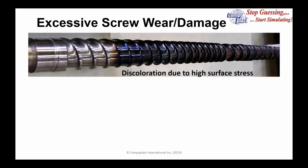Let's begin with excessive screw wear or damage. This photograph shows an extrusion screw that's been pulled out after being used and cleaned off. You notice the discoloration that occurs — this is the original color when the screw was first put in the extruder. You can see the dark blue discoloration on the surface in this region and darker discoloration further along. This discoloration is due to high surface stress, generally an indication of very high pressures or compression of the material in these regions.